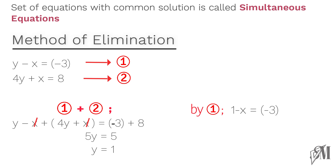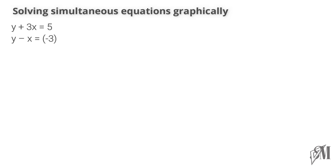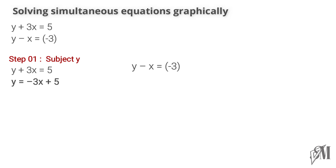So y is equal to 1. By substituting y equals 1 in equation 1, we can get x is equal to 4. Simultaneous equations can also be solved using graphs. Consider: y plus 3x equals 5, and y minus x equals minus 3. The first step is to make y the subject in both equations. From the first equation we get y equals minus 3x plus 5, and the second equation becomes y equals x minus 3.